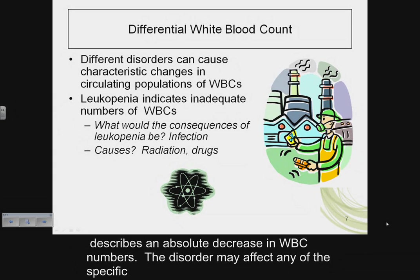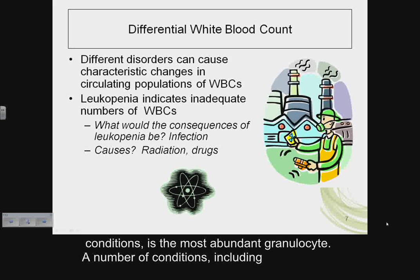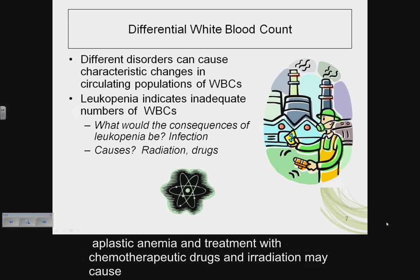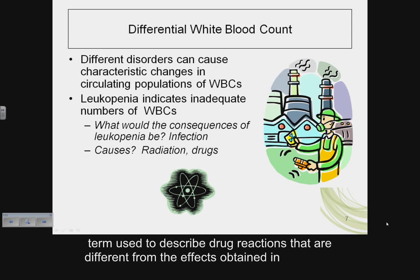Leukopenia describes an absolute decrease in white blood cell numbers. The disorder may affect any of the specific types of white blood cells, but most often it affects neutrophils, which under normal healthy conditions is the most abundant granulocyte. Conditions including aplastic anemia and treatment with chemotherapeutic drugs and irradiation may cause leukopenia, as may idiosyncratic drug reactions.